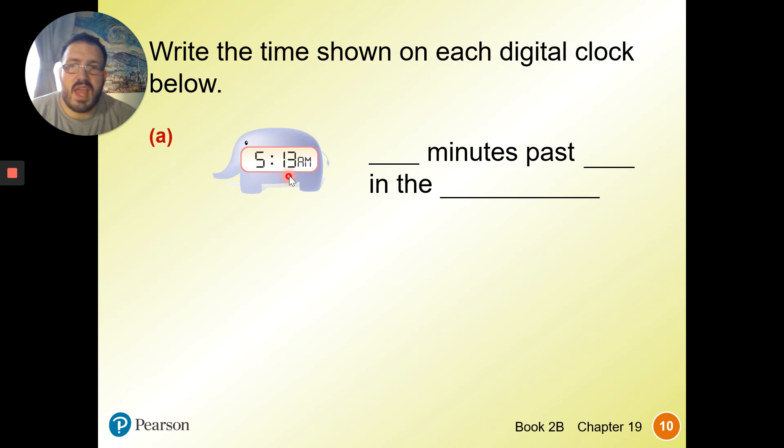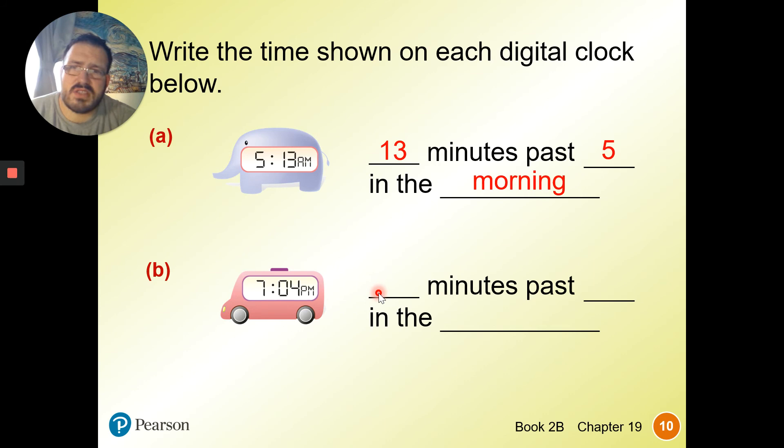When we're writing the time down like this, we say, how many minutes have gone past? That's 13. What hour was it? Five. And it's in the a.m., which is morning. 7:04 p.m. So again, it's still past four minutes. What hour was it? Seven. And it's in the afternoon.